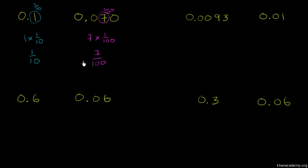And now we could compare these two numbers. There are two ways you could think about it. You could try to turn 1 tenth into hundredths. If you want the denominator to be increased by a factor of 10, you need to do the same thing to the numerator. So multiplying the numerator and denominator by 10, 10 hundredths is the exact same thing as 1 tenth. And here it becomes very clear: 10 hundredths is definitely larger than 7 hundredths.